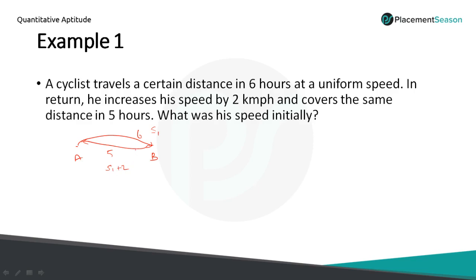In this scenario, both distances are equal — A to B equals B to A, so D1 equals D2. We know distance equals speed into time, so we directly substitute: S1 into T1 equals S2 into T2.